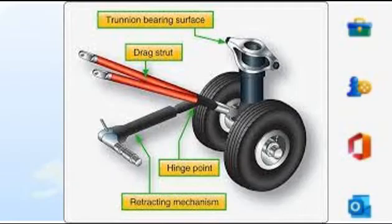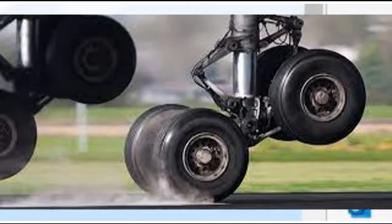Landing gear provides support and directional control of the aircraft while on the ground, and is a means for the aircraft to transition from the ground to the air. During landing and taxiing, the gear will provide a cushion effect that absorbs shock. A landing gear assembly consists of a shock strut, actuating cylinders, side and drag brace, torque links, and a wheel and brake assembly.